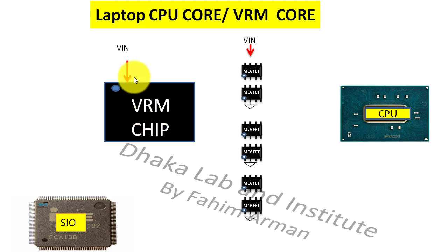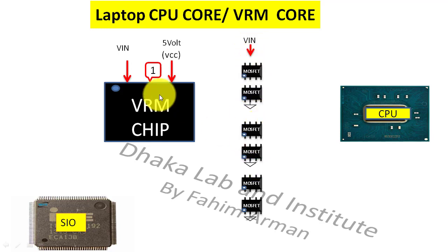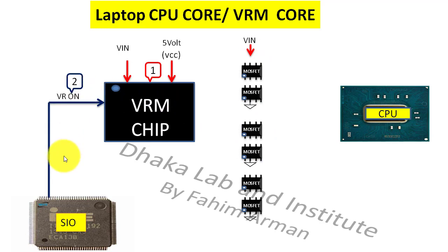First there will be VIN voltage from the adapter or maybe the battery, and there will be VCC 5 volt — this is the first step of that section. There will be VIN voltage in all the main MOSFETs of these phases, and then there will be a BRN signal from the SIO which will enter into the VRM chip. This is the second step.